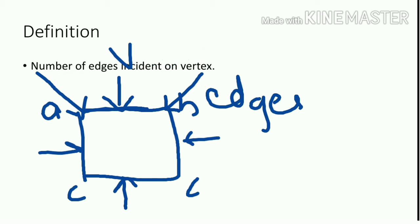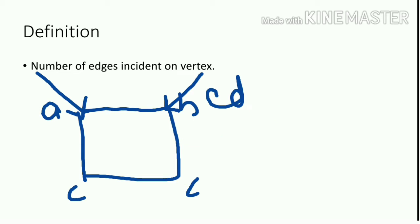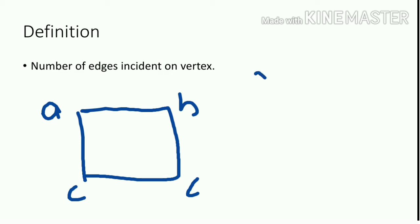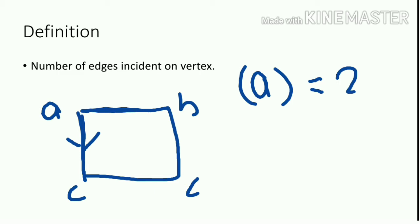According to the definition, degree of vertex is the number of edges incident on the vertex. For vertex A, we can see two edges are connected to A, so the degree of vertex A is 2. Similarly, the degree of vertex B is 2, because vertices A and C are connected to B.